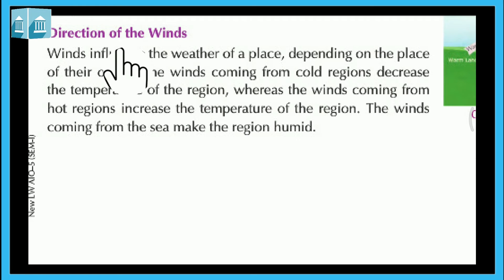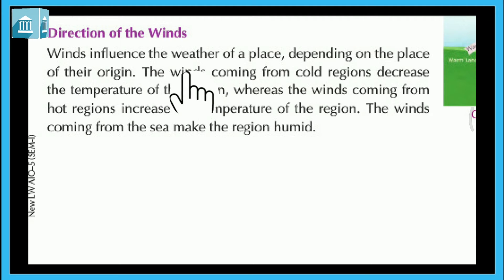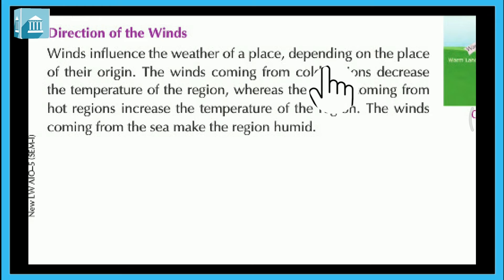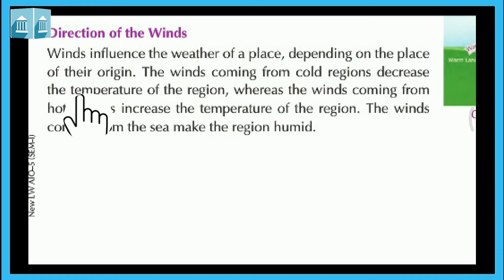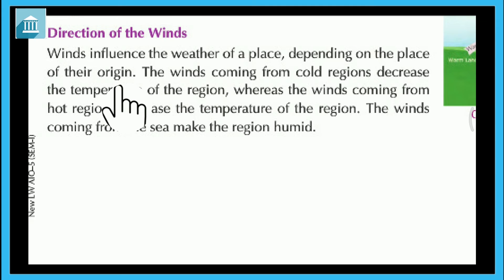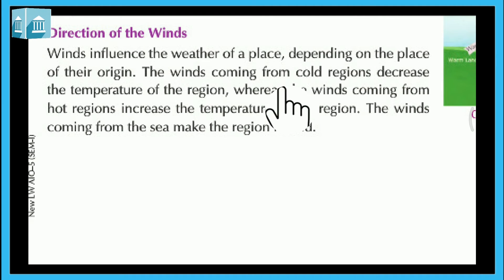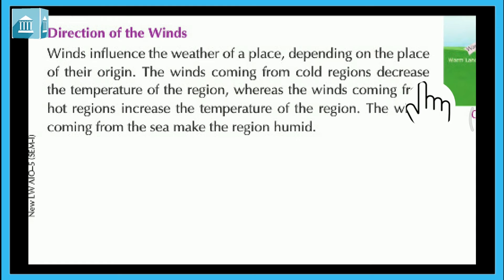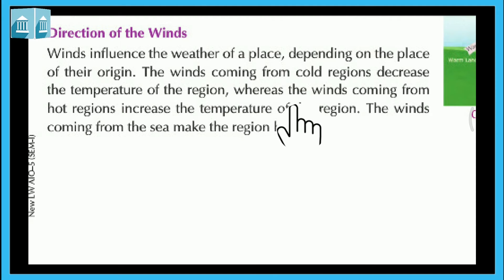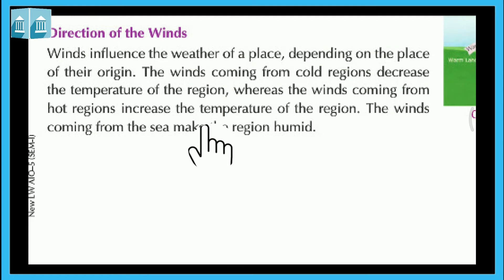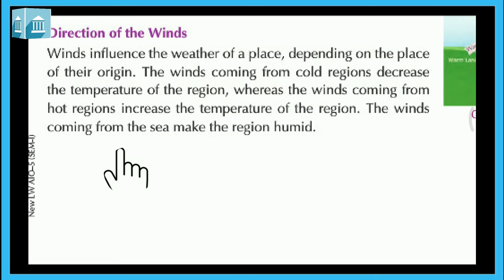Direction of the winds: Winds influence the weather of a place depending on the place of their origin. The winds coming from cold regions decrease the temperature in the region, whereas the winds coming from hot regions increase the temperature of the region. The winds coming from the sea make the region humid.